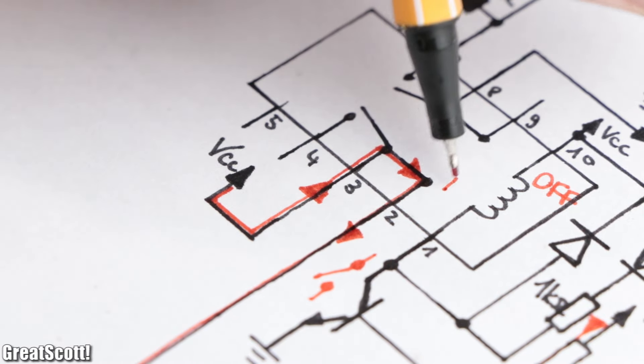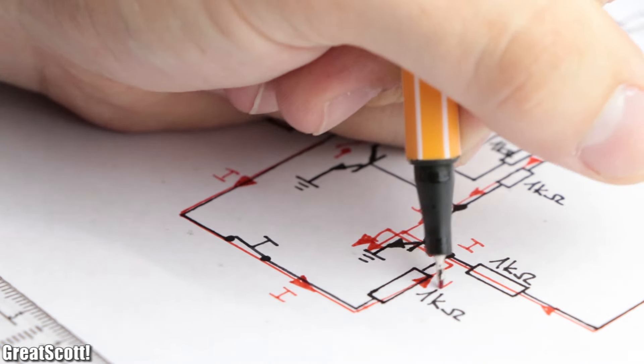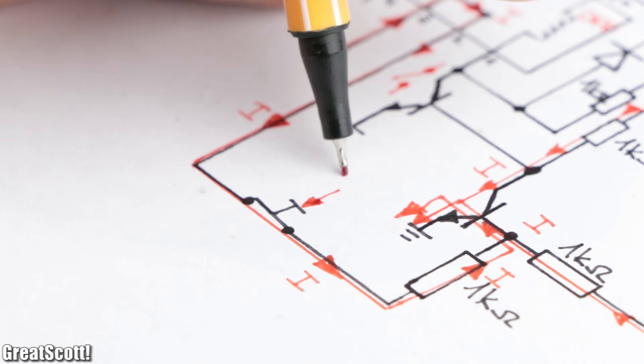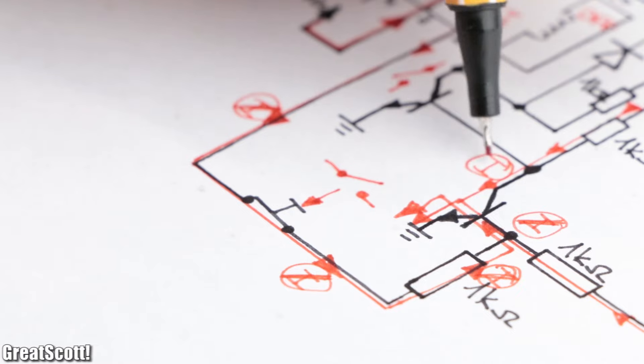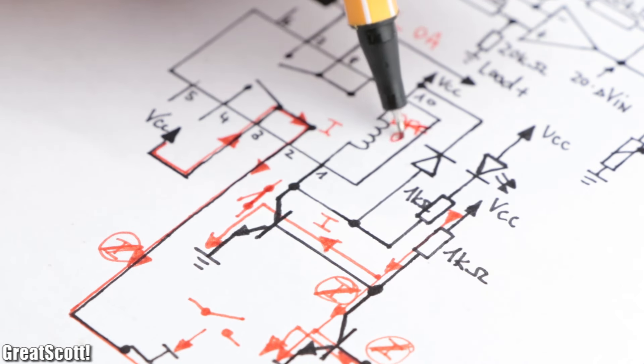Now when a fault occurs the relay will still turn off, but since the normally closed contact of the relay is now obviously closed, the base of the transistor is still pulled to the supply voltage even though the comparator output is put low. This way the relay stays off until the tactile switch is pushed and thus interrupts the base current of the second transistor, which therefore allows the relay to be activated once again.